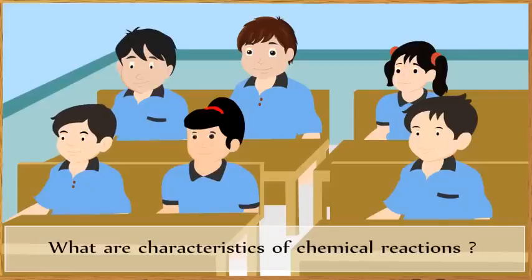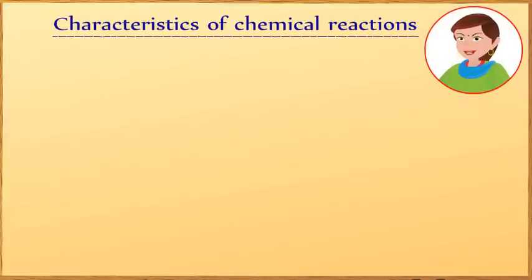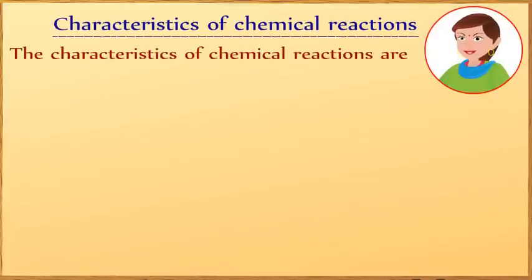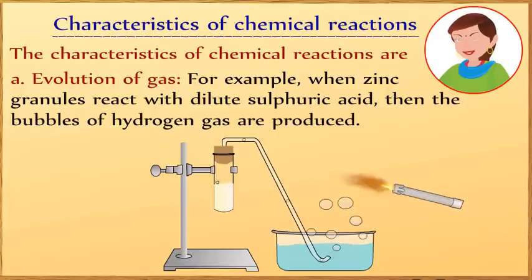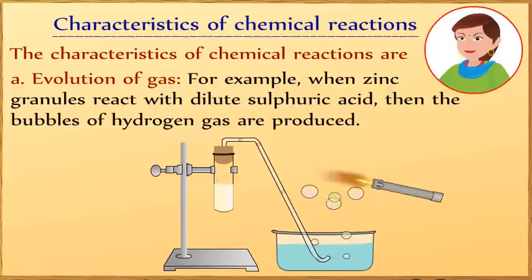What are characteristics of chemical reactions? The characteristics of chemical reactions are: evolution of gas. For example, when zinc granules react with dilute sulfuric acid, then bubbles of hydrogen gas are produced.